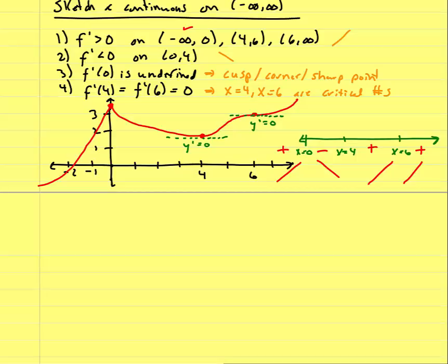We've talked about intervals of increasing and decreasing, and the slope chart is tied to the first derivative test. If there's a sign change in the derivative from negative to positive or positive to negative, I have a relative extremum — a relative max or min. I like to look at it pictorially on the number line because it gives a clear idea of what's happening with the function.